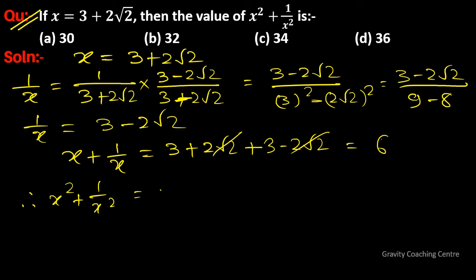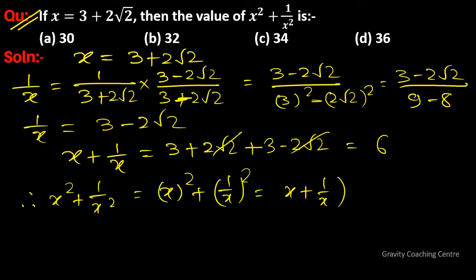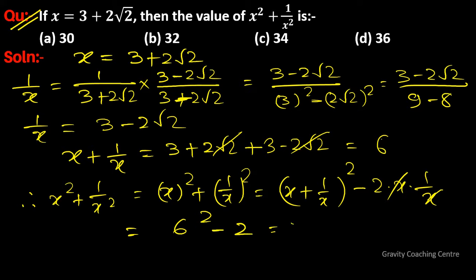x square plus 1 upon x square equals (x plus 1 upon x) whole square minus 2 times x times 1 upon x. The x terms cancel, giving 6 square minus 2, which is 36 minus 2, equal to 34. So the answer is 34, and option C is the correct answer.